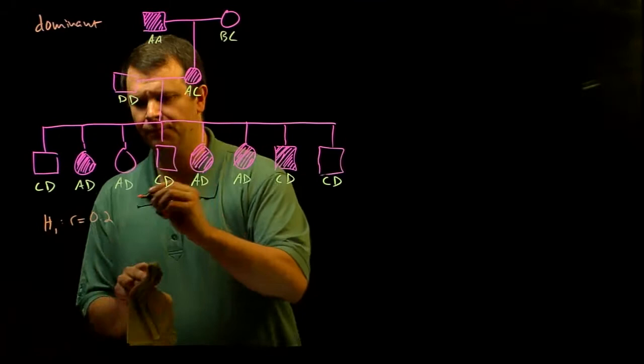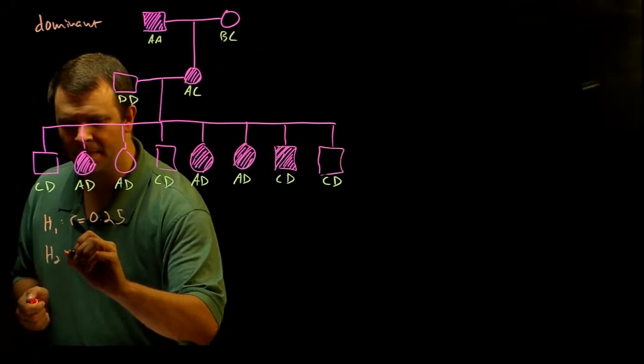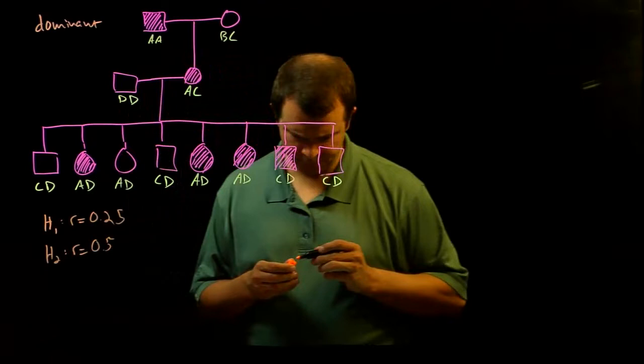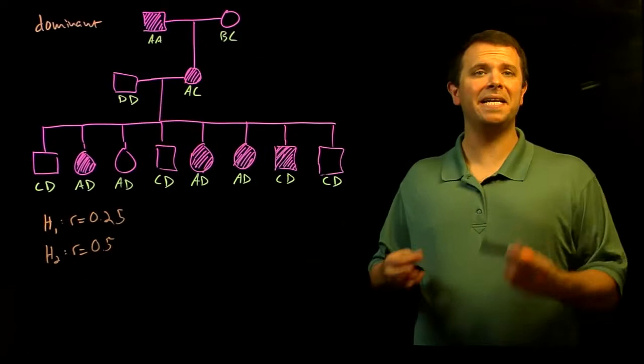And so our second hypothesis is that these genes are unlinked. And remember that if genes are unlinked, then they have a recombination frequency of 0.5. Now let's look at the pedigree. There are six meiotic events, six meiosis, six gametes.